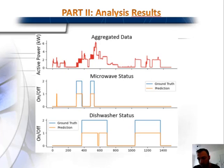For example, between 1000 and 1400 seconds the aggregated data is easy to analyze because there is not too much aggregation, so the model predicts easily. However, between 400 and 700 seconds the aggregated data is more complex, and in this case the model can make some small mistakes, but these are negligible.